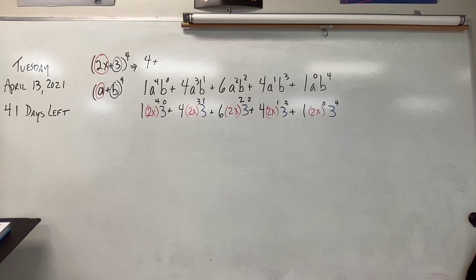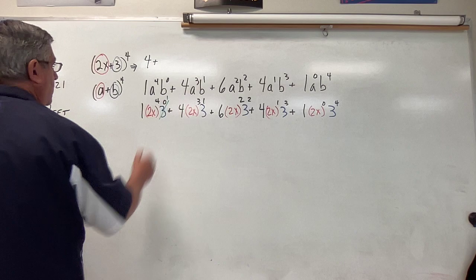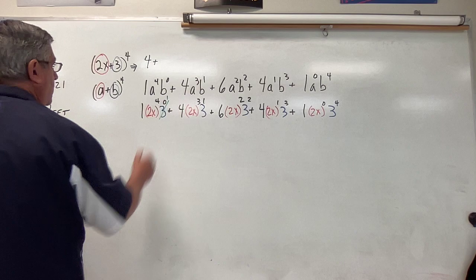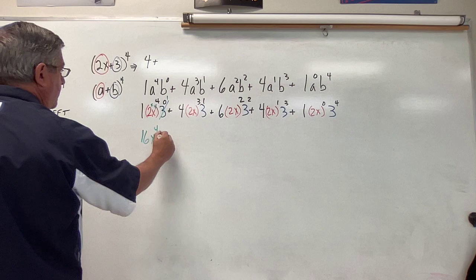All right, remember, anything to the 0 power is 1, even if it's got parentheses around it. Anything to the first power is itself, even if it's got parentheses around it. So as we go through this first problem here, the things that we're going to worry about, that becomes a 1. All right, so it's 1 times 1 times, so the 2 to the fourth, x to the fourth. So this becomes 16x to the fourth, the plus.